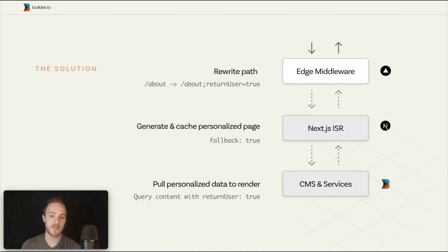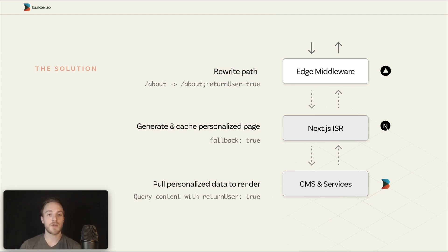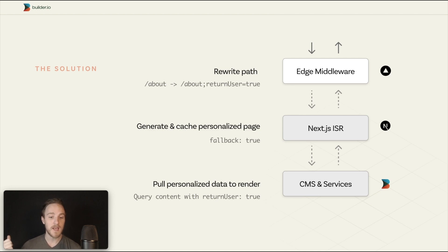The secret sauce here is Next.js incremental static regeneration using the fallback true option. So if anything comes in and we haven't seen this combination of parameters for the about page path, we can then go and fetch that. We can decode it very easily using a utility Builder provides or any of your own systems.